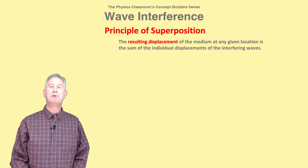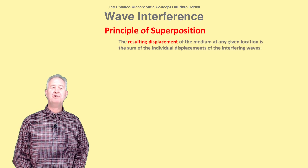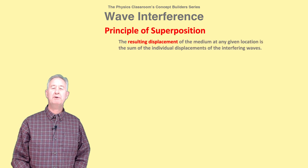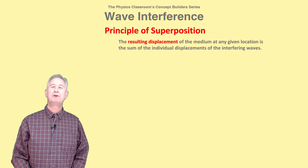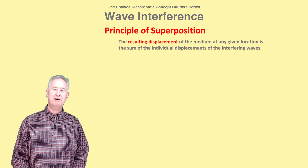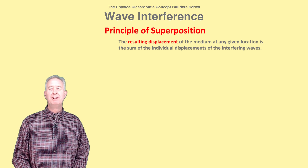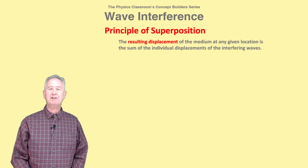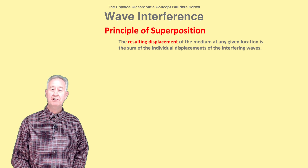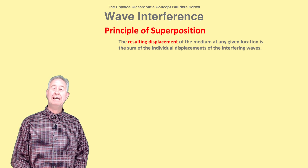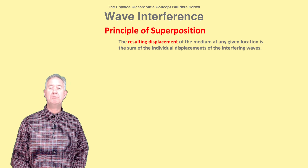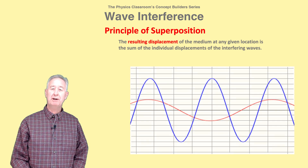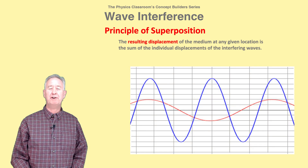The principle of superposition allows us to predict the resulting shape of the medium when two waves are interfering. The principle states that the resulting displacement at any location is the sum of the individual displacements caused by each interfering wave.